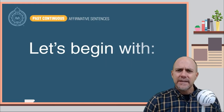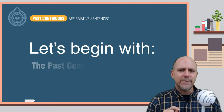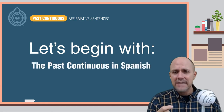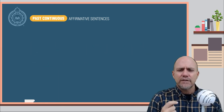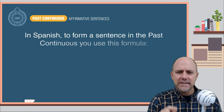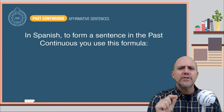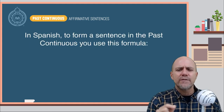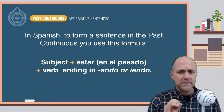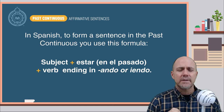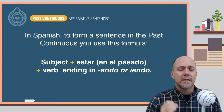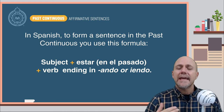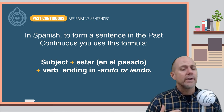Let's begin with what you already know: the past continuous in Spanish. To form the past continuous in Spanish, you use this formula: the subject, plus the verb estar en el pasado, plus the verb ending with -ando or -yendo.